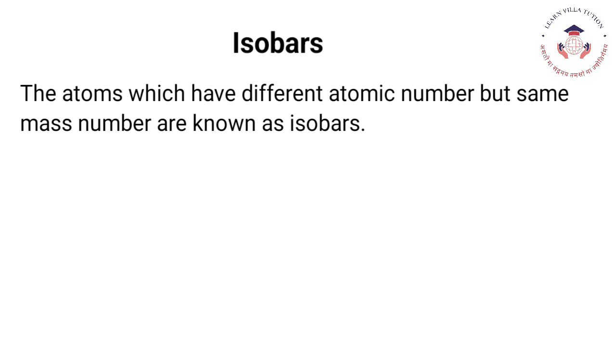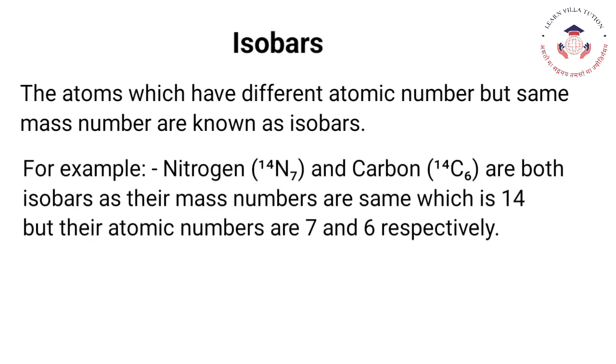Isobars: The atoms which have different atomic number but same mass number are known as isobars. For example, nitrogen (¹⁴N₇) and carbon (¹⁴C₆) are both isobars as their mass numbers are the same, which is 14, but their atomic numbers are 7 and 6 respectively.